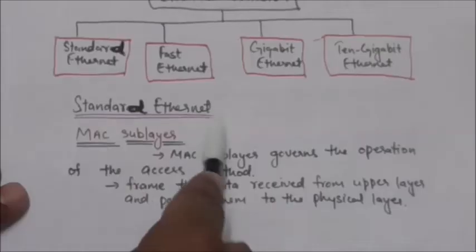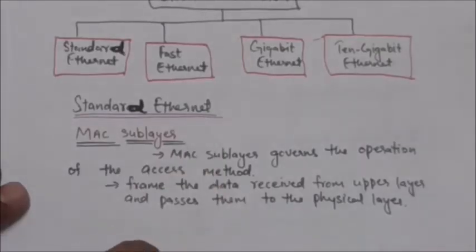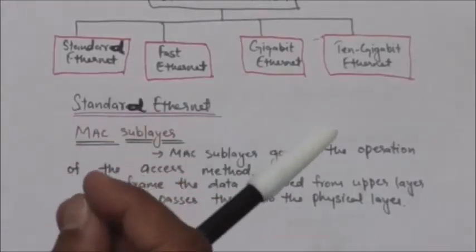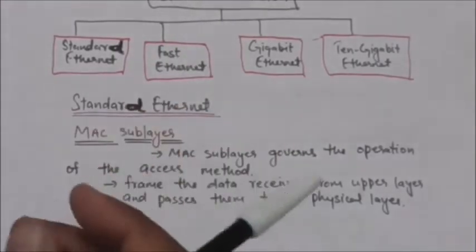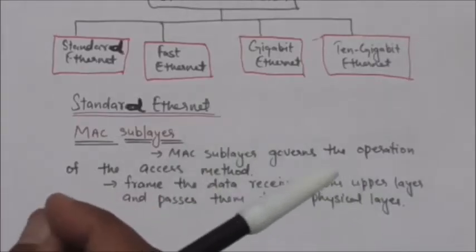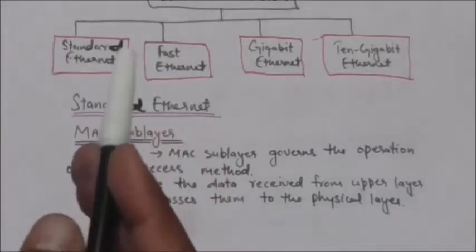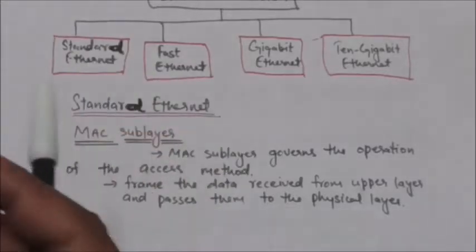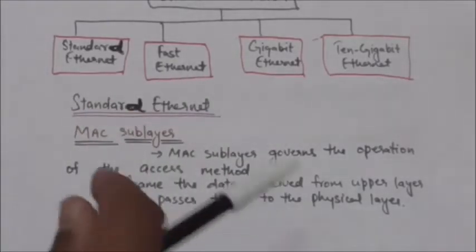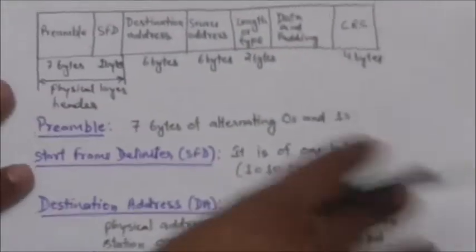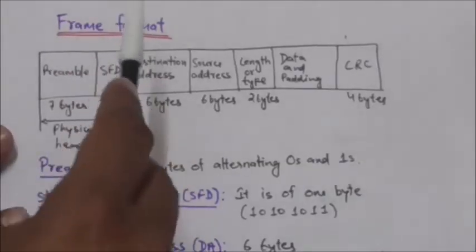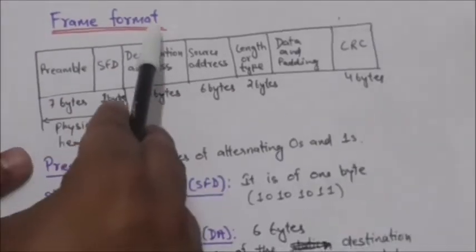In this tutorial we will study only about Standard Ethernet. In Standard Ethernet, the MAC sublayer governs the operation of the access method. The MAC sublayer also frames the data it receives from the upper layer and passes them to the physical layer.